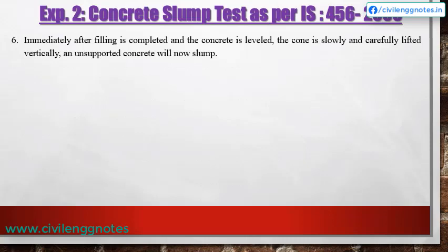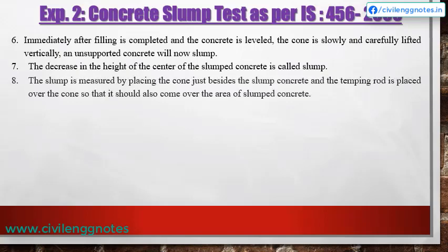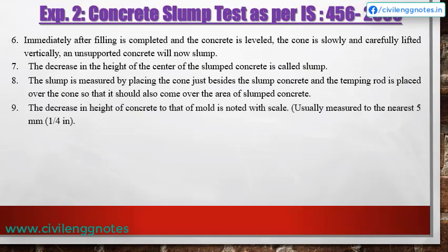Immediately after filling is completed and the concrete is leveled, the cone is slowly and carefully lifted vertically — the unsupported concrete will now slump. The decrease in the height of the center of the slumped concrete is called slump. The slump is measured by placing the cone beside the slump concrete and the tamping rod is placed over the cone so that it also comes over the area of slump concrete. The decrease in height of concrete relative to the mold is noted with a scale, usually measured to the nearest 5 mm.